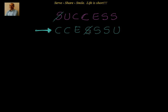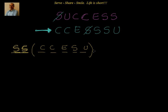We now count words starting with SS. With S and S fixed, five slots remain, filled with C, C, E, S, U. The number of arrangements is 5! divided by 2! (since C repeats twice), giving 120 divided by 2, which equals 60 words starting with SS. Once SS is done, we finally move to SU, which is the prefix we want.